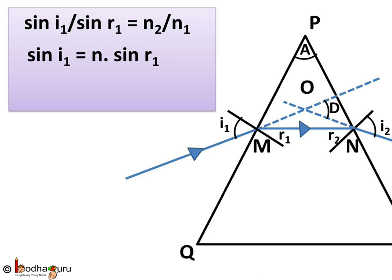If we apply Snell's law at point M, then sin of I1 by sin of R1 is equal to N2 by N1. Here N1 is the refractive index of first medium, that is of air, and it is equal to 1. And N2 is the refractive index of material of the prism. Let us call it N. So we get sin I1 is equal to N sin R1.